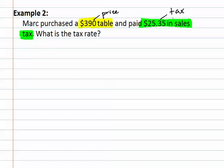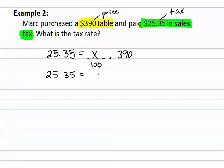Remember, the price is our whole and the tax is the part. So we can set it up as: part, or 25.35, equals our tax rate or percent — which, if we do not know the percent, we use x over 100 — times the original price of the table, or 390. We now have 25.35 equals x over 100 times 390, which simplifies to 390x over 100.